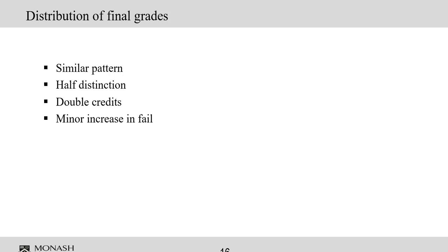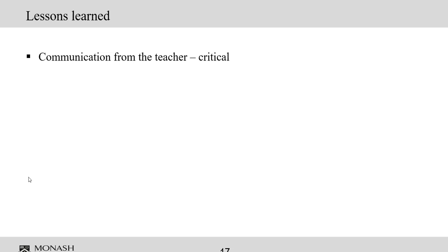After the semester ended, we found that the overall grade distribution pattern was very similar to the previous semester. However, a major difference was that there were half the number of distinction grades compared to the previous semester and double the number of credit grades. There was also a minor increase in the fail rate of around 4%, which we believe was due to dropouts following the introduction of distance mode teaching and learning.